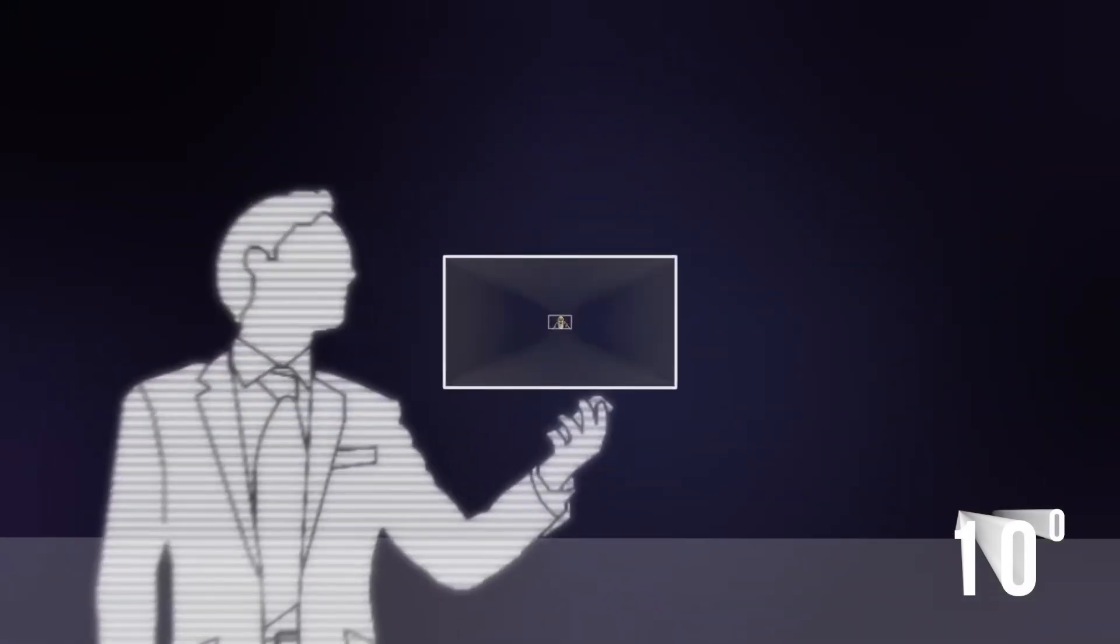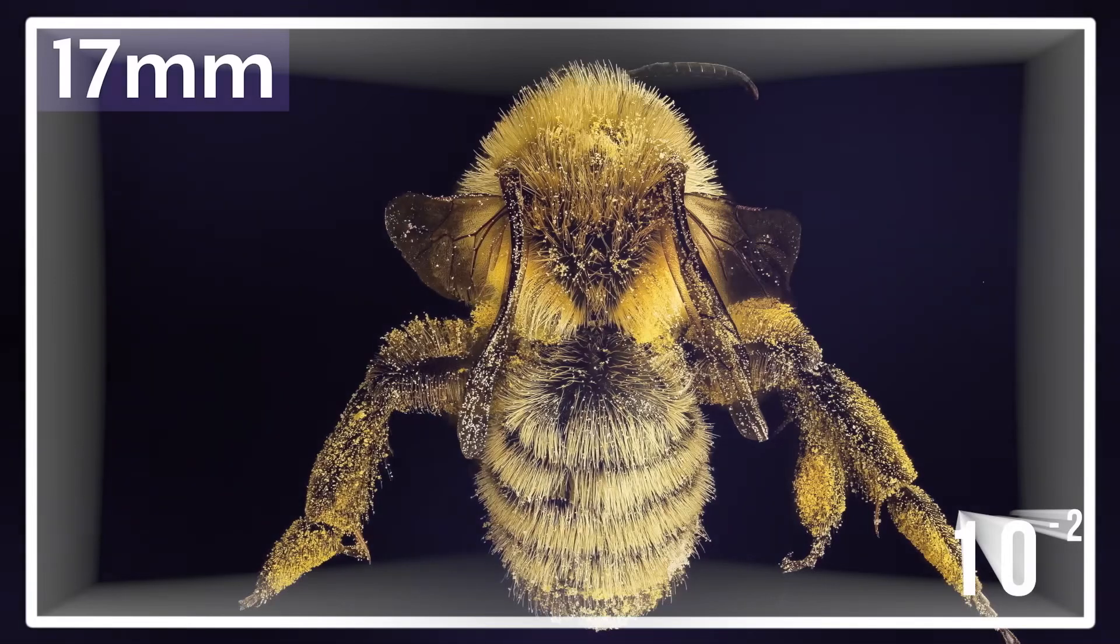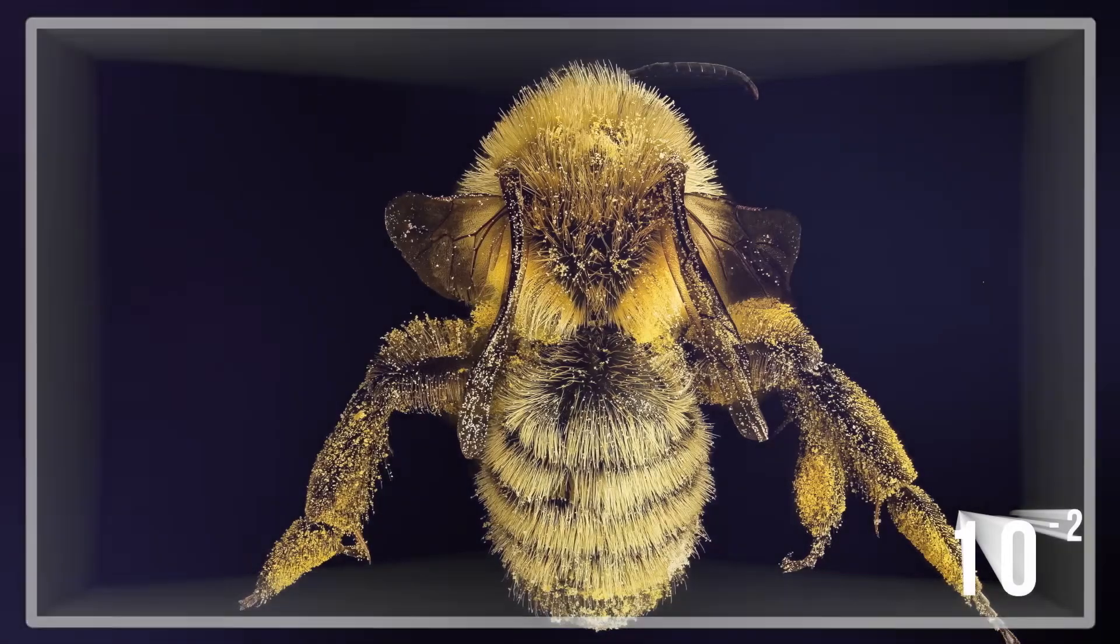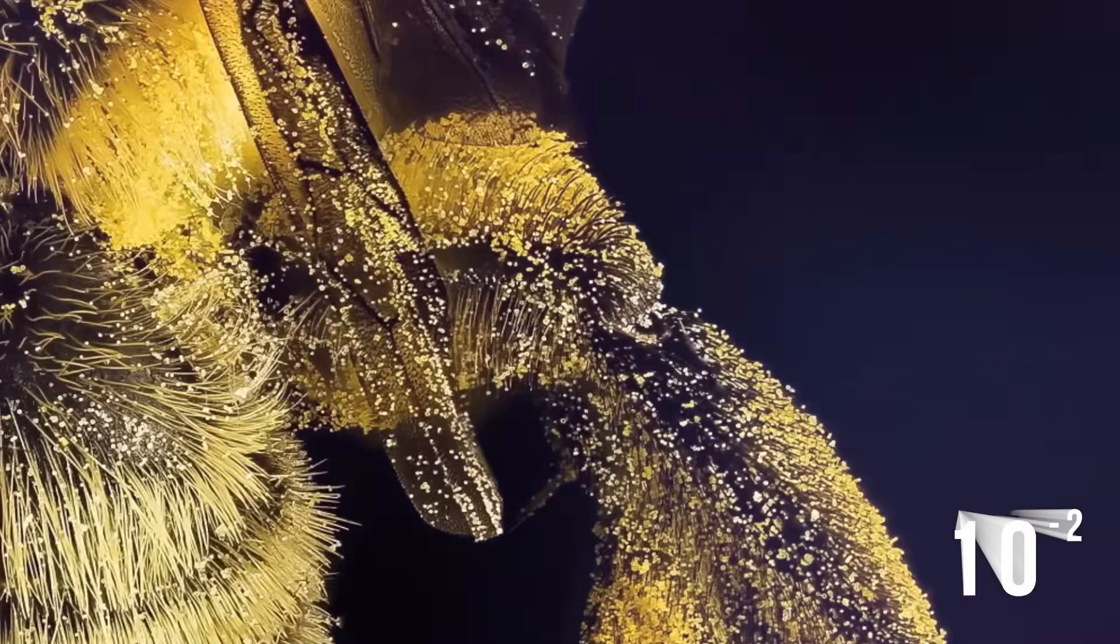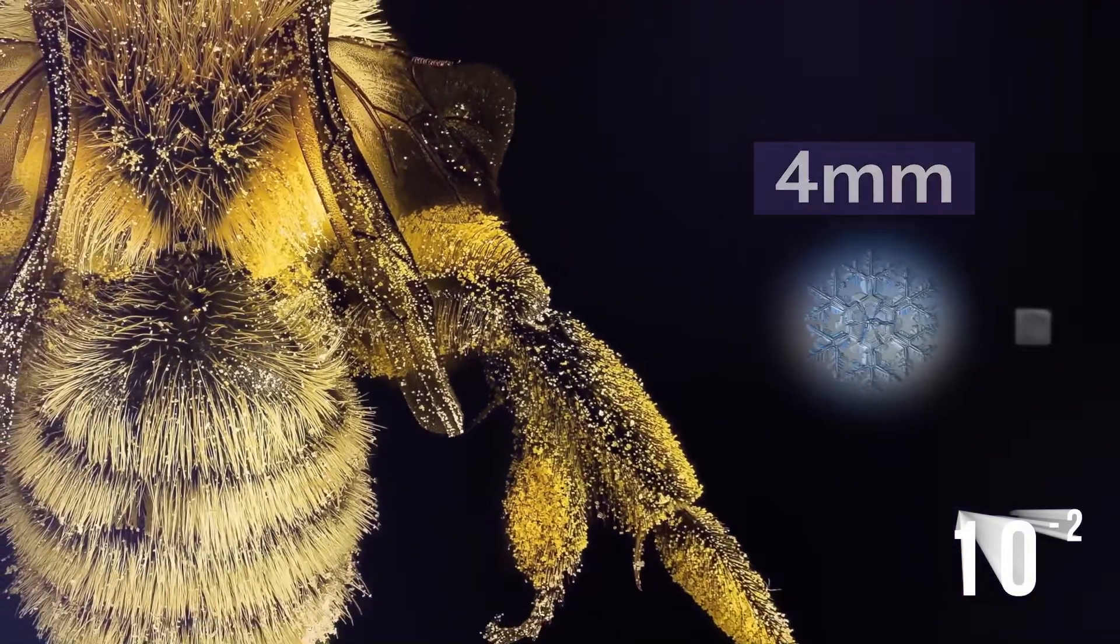Starting by reducing ourselves by a factor of 100, at this scale we can now scrutinize a bee in detail, here covered with small piles of pollen, and near which is a snowflake and a grain of salt.